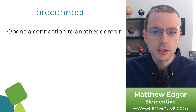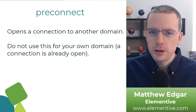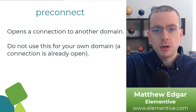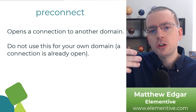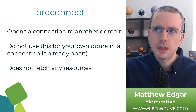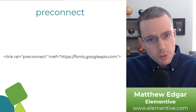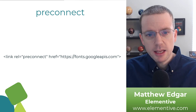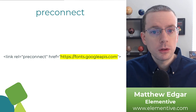The next tag we have is preconnect. A preconnect opens a connection to another domain. You don't need to use this for your own domain — by the time somebody's looking at your website, they've already connected to your domain. A preconnect tells the browser to prepare a network connection to some other domain, but it doesn't fetch any resources from that domain. You can think of this like opening up a door to that other domain, but you're not going through the door at this point. For example, this code will preconnect to Google Fonts — we have our link tag with a rel set to preconnect and then the href set to fonts.googleapis.com.